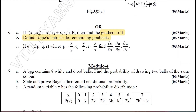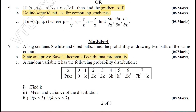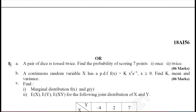Moving on to Module 4 — it is on probability. Given a simple probability problem, you can find the probability of drawing two balls of the same color. Next, state and prove Bayes' theorem of conditional probability. Using a random variable, you are required to find k, mean, variance of the distribution, probability of x less than 3, and probability of x lying between 4 and 7. Question 8A is again a simple probability problem: given a pair of dice tossed twice, find the probability of scoring seven points once and twice — that is, P(x=1) and P(x=2).